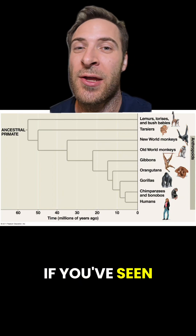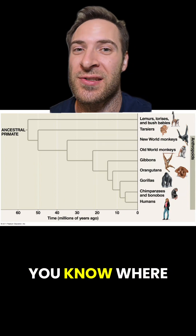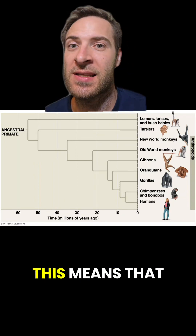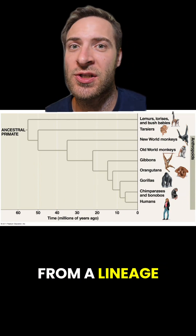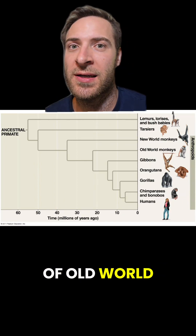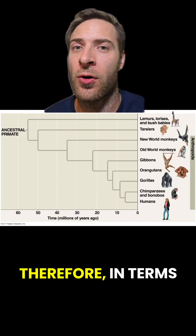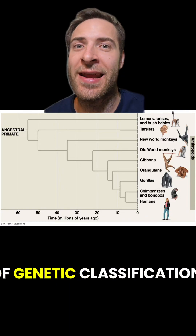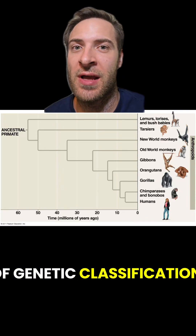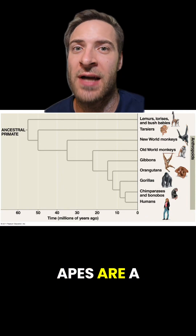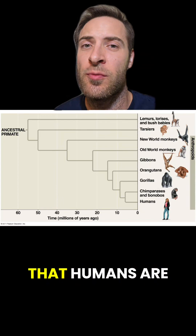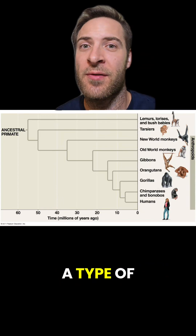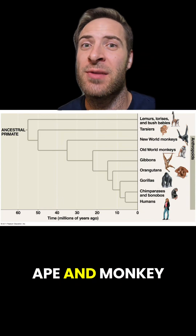If you've seen my other videos, you know where this is going. This means that apes are descended from a lineage of old world monkeys. Therefore, in terms of genetic classification, apes are a type of monkey. This also means that humans are a type of ape and monkey.